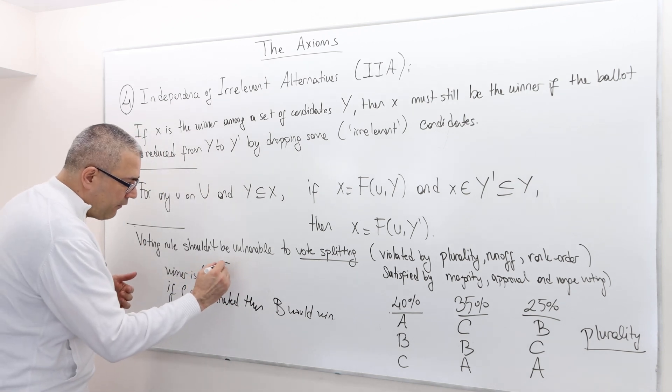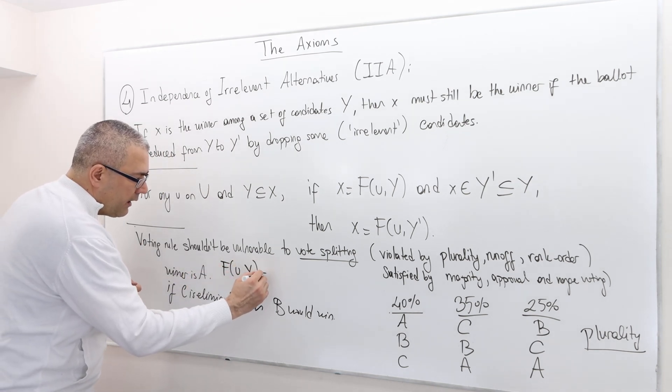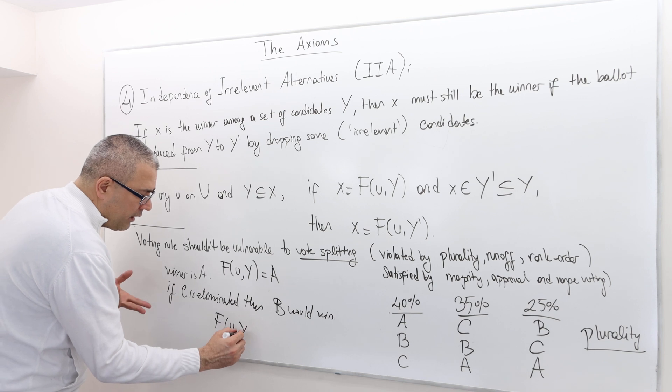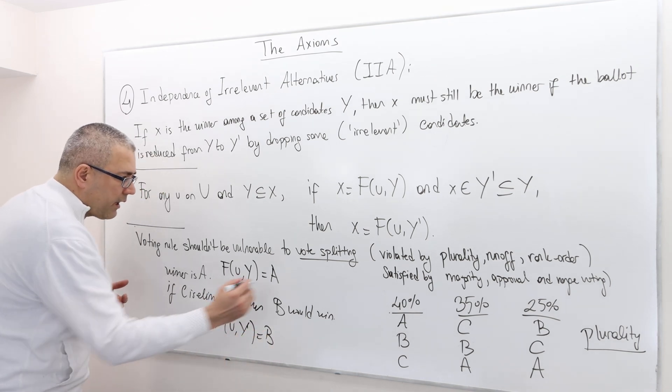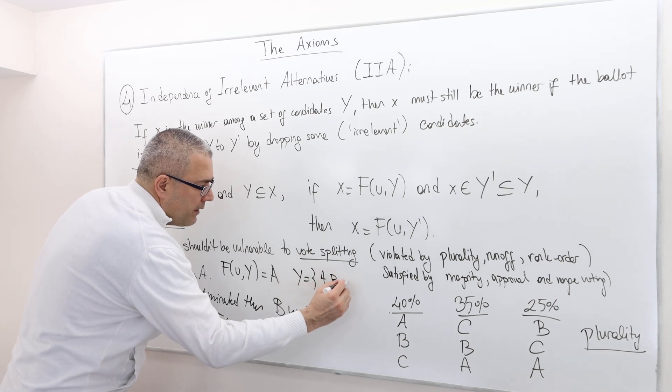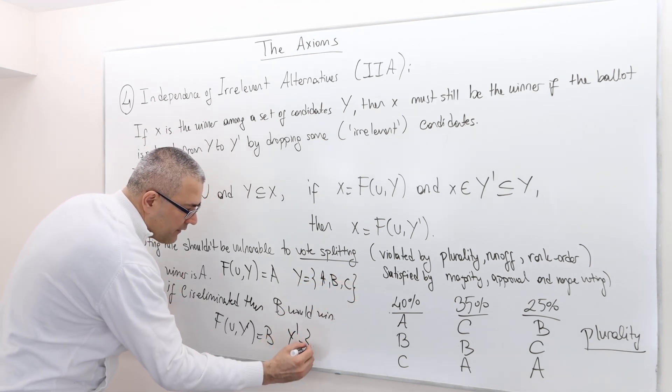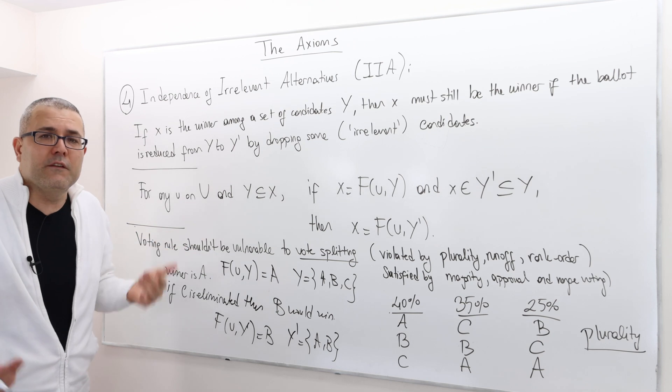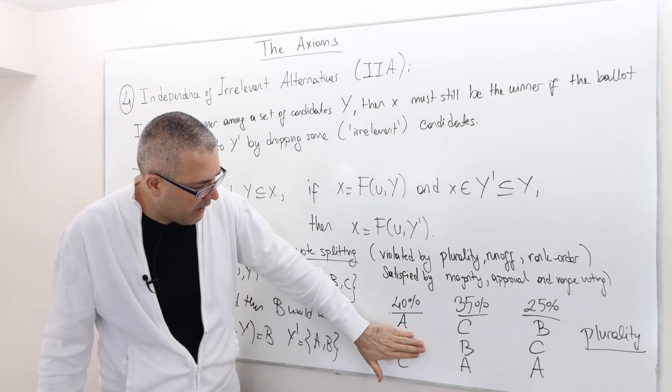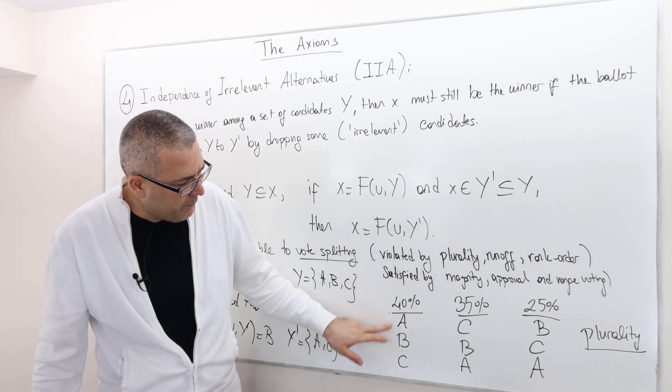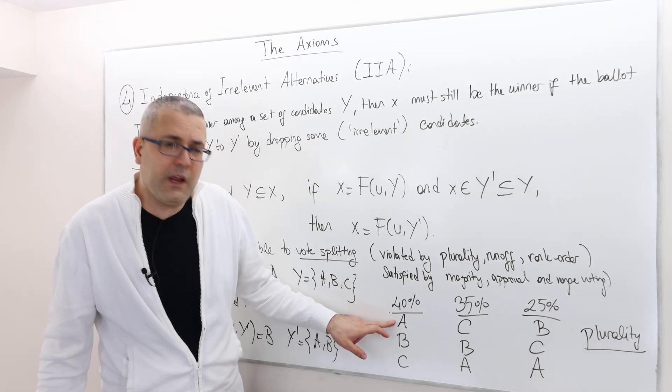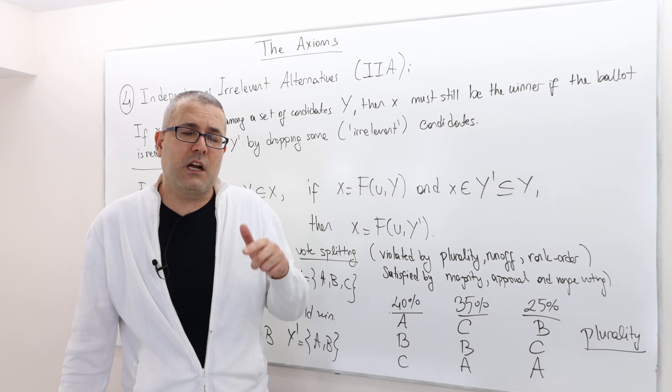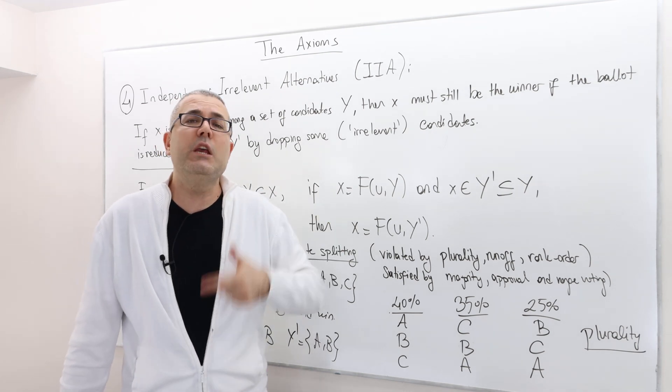What does that mean? That means F of U, Y is equal to A. However, F of U, the same preference profile, Y prime, is equal to B, where Y is the set where all A, B, and C are present. And here, Y prime is the set with only A and B. You see what I mean? What about if we drop B from the picture? The same thing, if B is out of picture, 40% of the voters are going to vote for A. However, as you see, C is better than A. 60% of the voters are going to vote for C. So C would win.